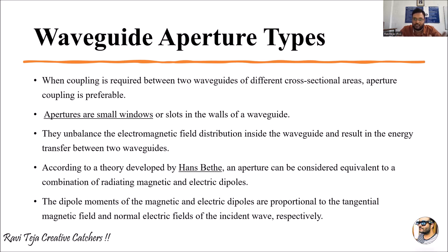This particular theory was initially developed by Hans Bethe. They considered both the radiating electric field and the magnetic field, or we can simply call them magnetic as well as electric dipoles. The dipole moments of both magnetic as well as electric dipoles are completely proportional to the tangential magnetic field and the normal electric field of the incident wave given as input. That input wave will have a tangential magnetic field and a normal electric field, which are perpendicular to each other and proportional to the dipole moments of the magnetic and electric dipoles respectively.